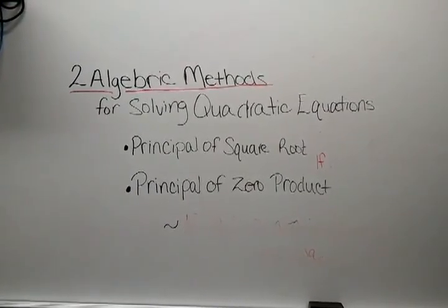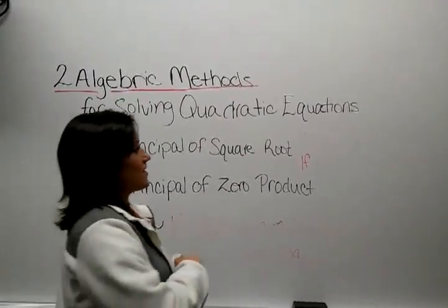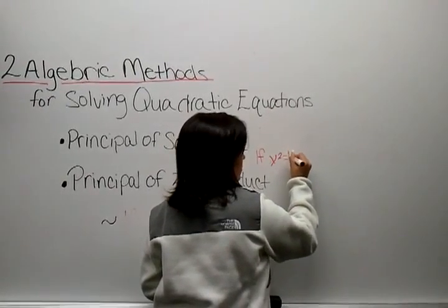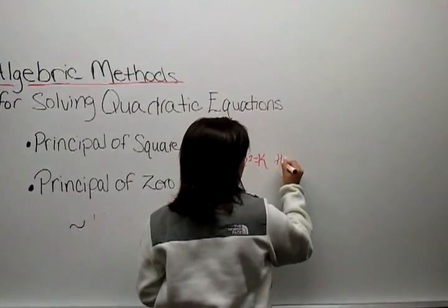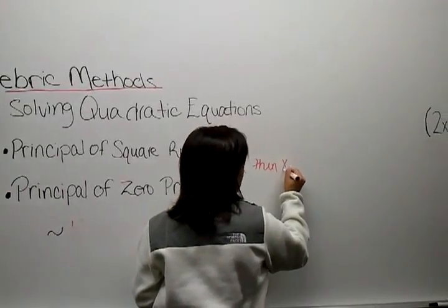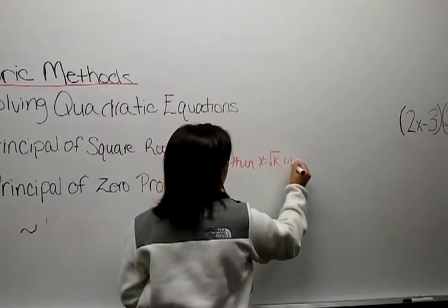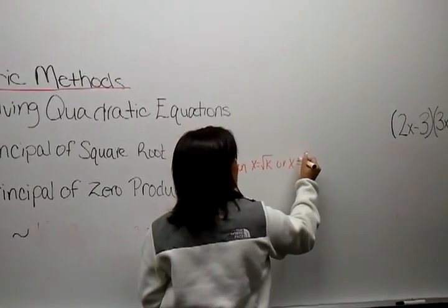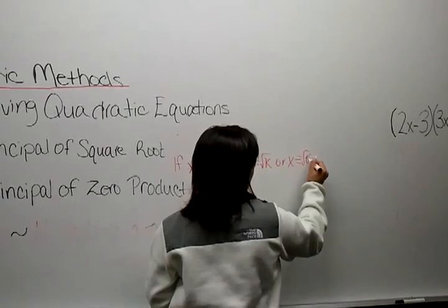First we have the principle of square root. This states if x squared is equal to k, then x is equal to the square root of k or x is equal to negative square root of k.